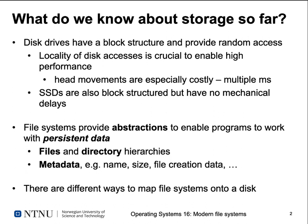So what do we know about storage so far? We know that disk drives have a block structure — data on disk drives is usually stored in multiples of a block size, like 512 bytes, and disk drives provide random access to these blocks. Whenever I want to read a block I can tell the disk drive to go directly to that block and deliver those 512 bytes of data.